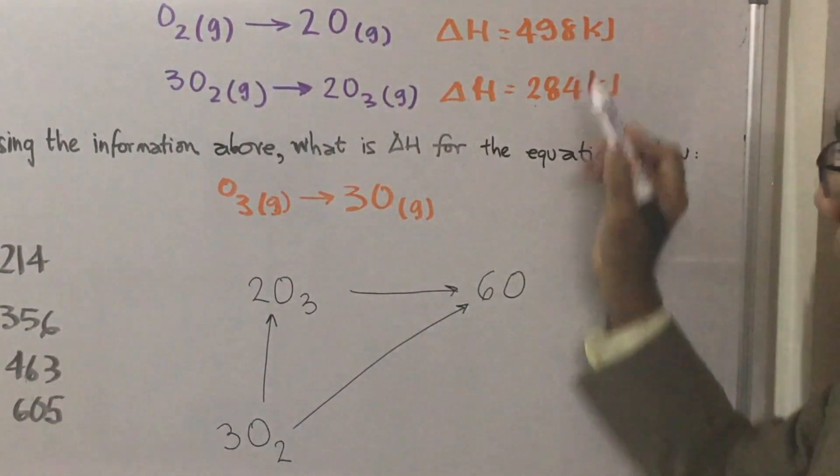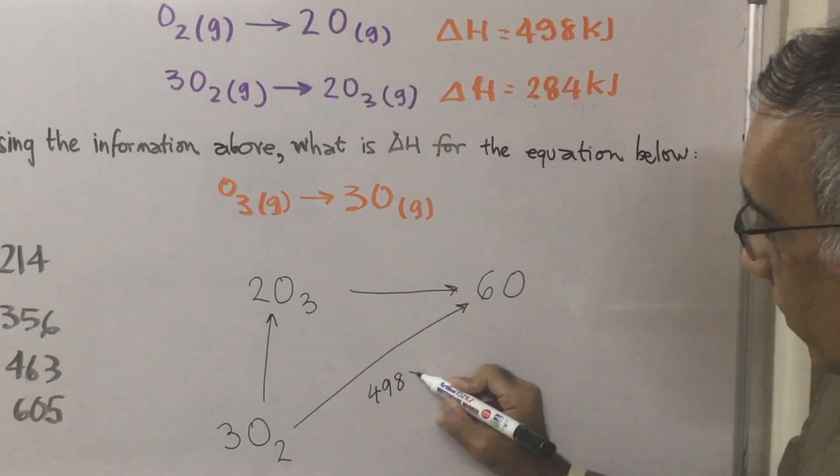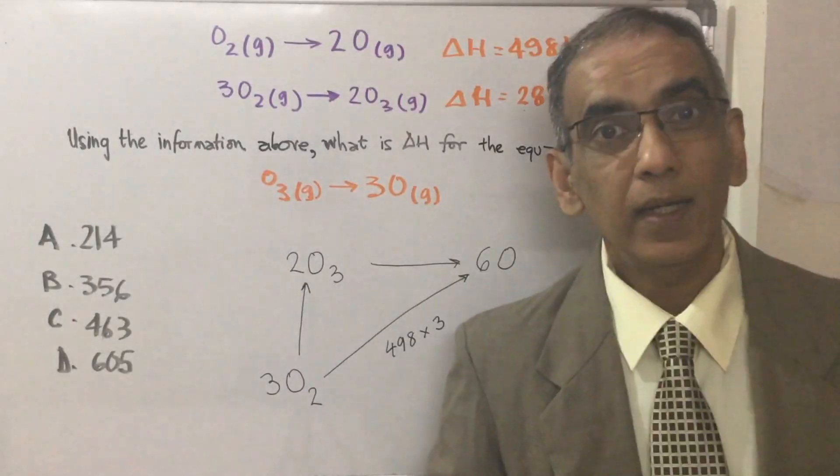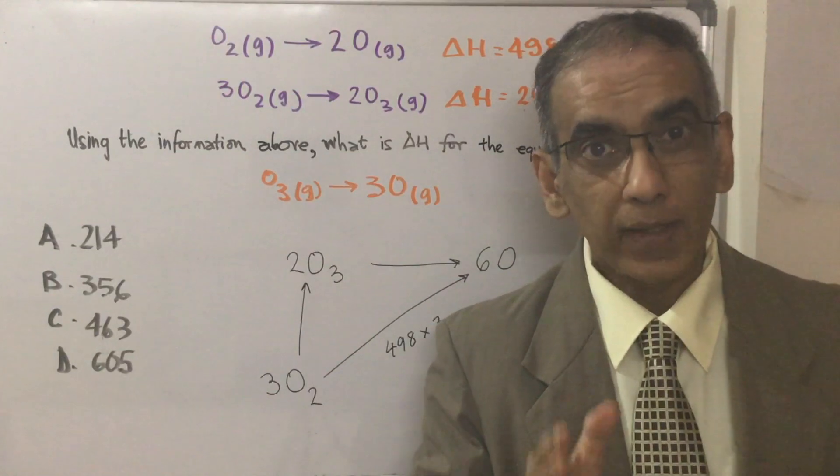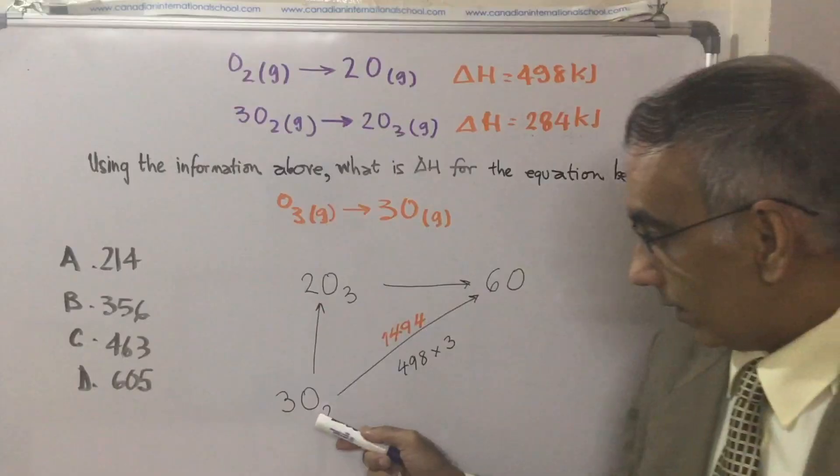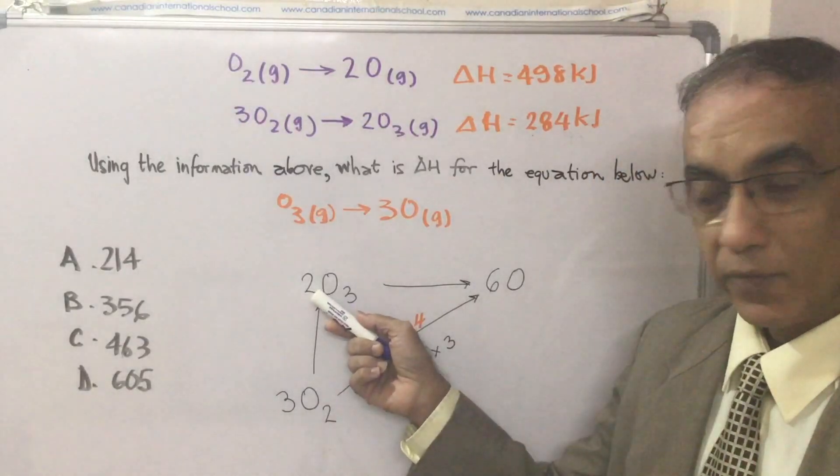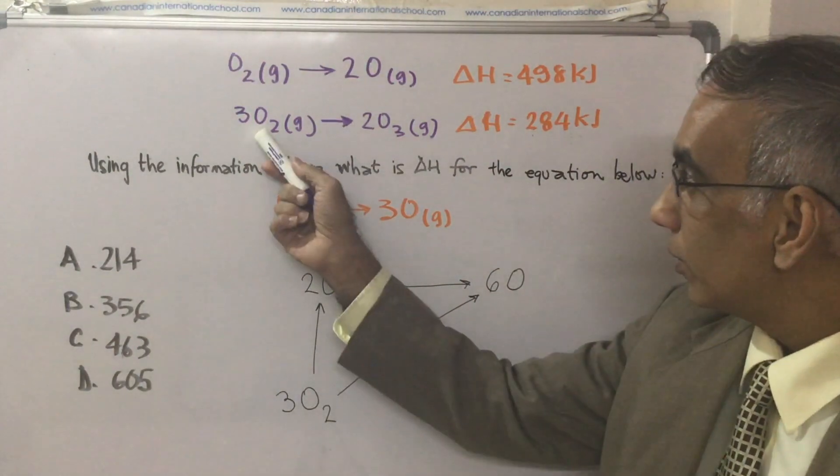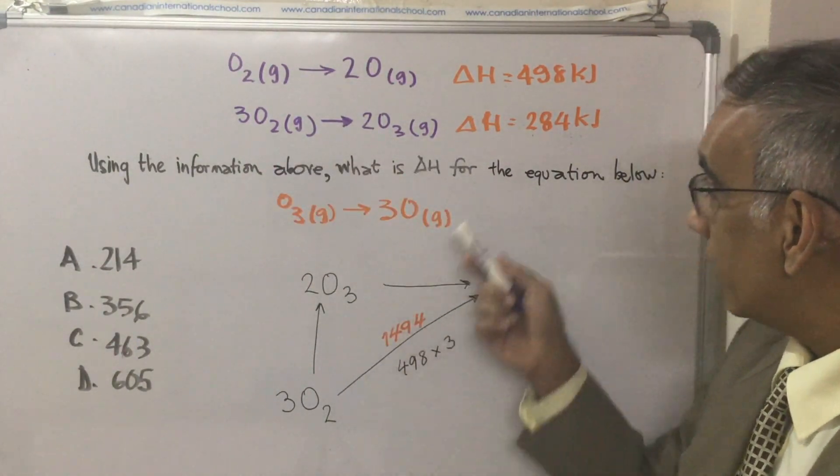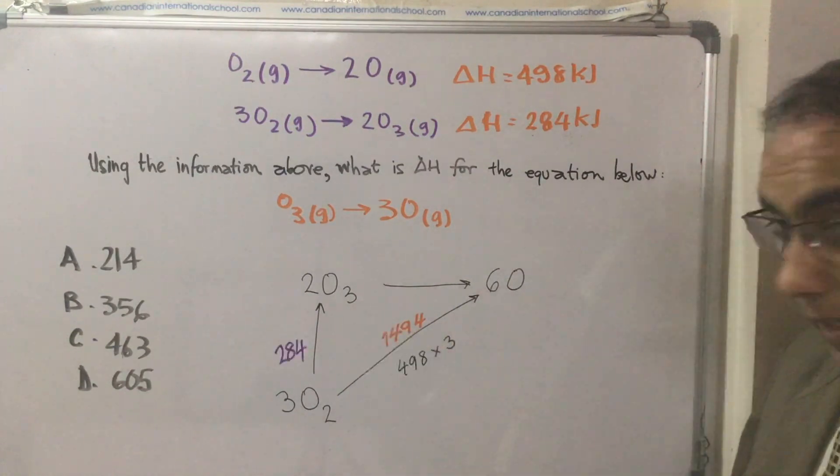So what we need to do is to say 498 multiplied by 3, and that comes to 1494 kilojoules. Over here with this transformation, 3O₂ giving 2O₃, it's 284.